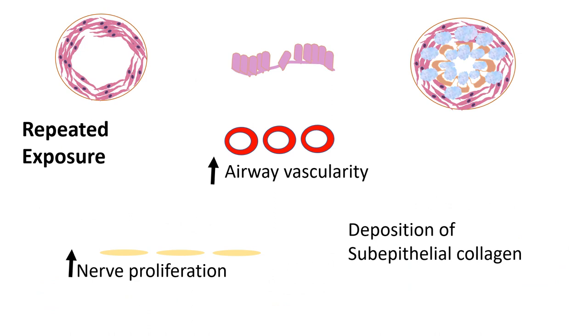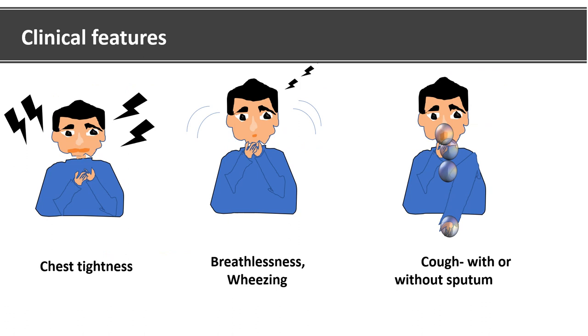As we know, asthma is a chronic disease, which means due to repeated exposure of allergens there will be airway remodeling due to local secretion of growth factors. What will it lead to? It will lead to hypertrophy and hyperplasia of bronchial smooth muscles, epithelial injury, increased airway vascularity, increased subepithelial mucous gland hypertrophy, deposition of subepithelial collagen, as well as increased nerve proliferation.